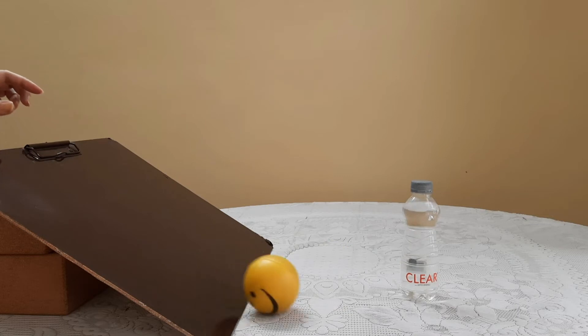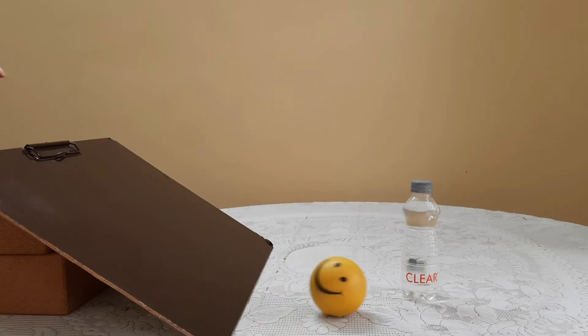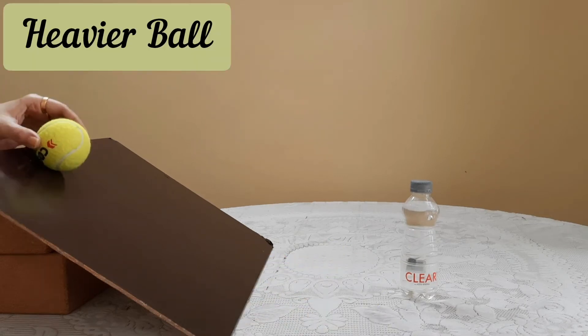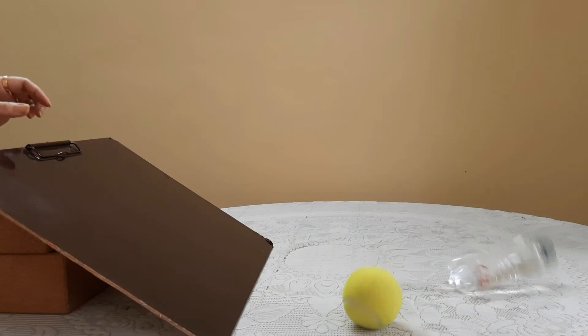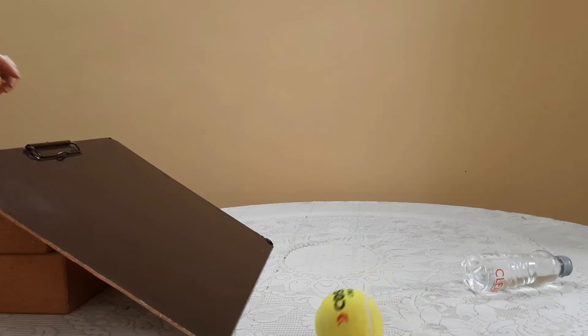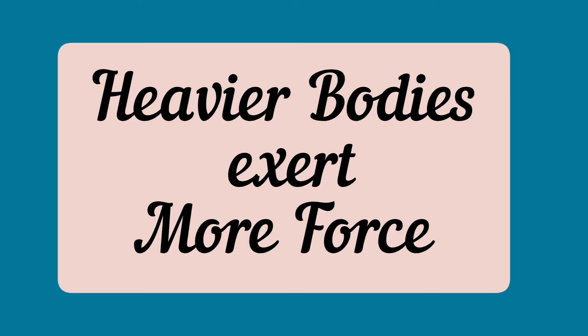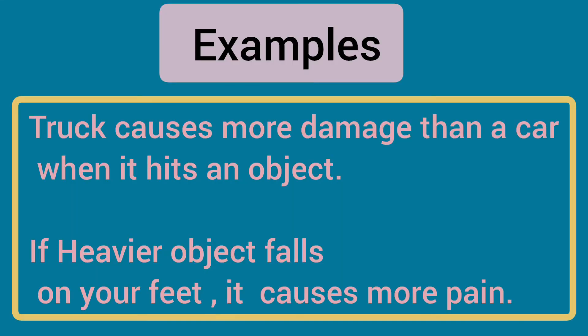The ball exerts some force on the water bottle. Let us now roll the heavier ball and see what kind of force it exerts on the water bottle. The heavier ball exerted more force. Some other examples: a truck causes more damage than a car when it hits an object, or if a heavier object falls on your feet it will cause more pain.